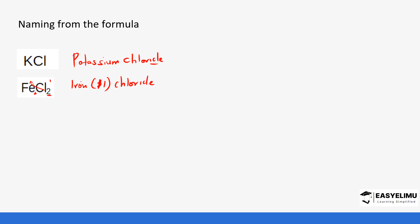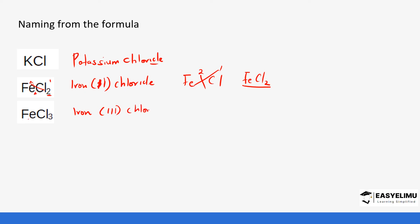Iron had a valency of two and chlorine a valency of one - if you crisscross, you get FeCl2. That is why we call it iron(II). The next formula: these three came from the iron as shown in the previous example, so it becomes iron(III) chloride. For aluminium sulfide: aluminium has a valency of three and sulfur a valency of two. It will be called aluminium sulfide.